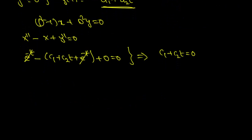Hence the general solution is x(t) = e^(−t) and y(t) = d1 + d2·t.